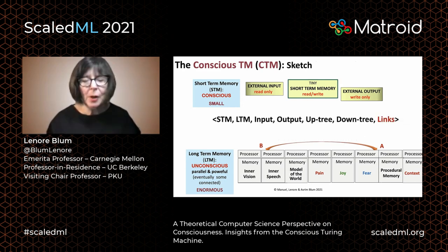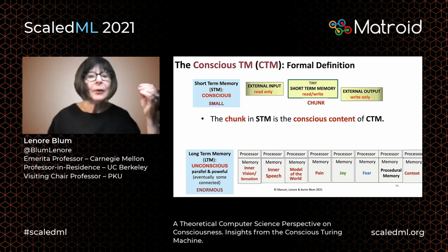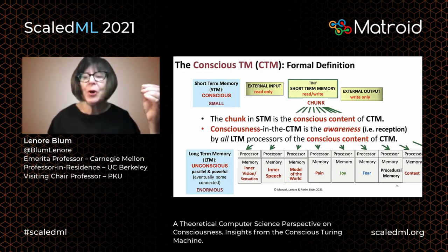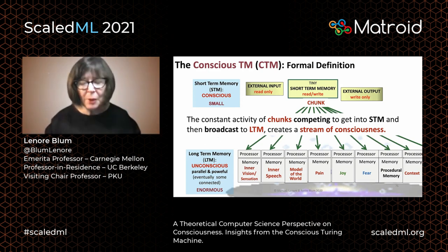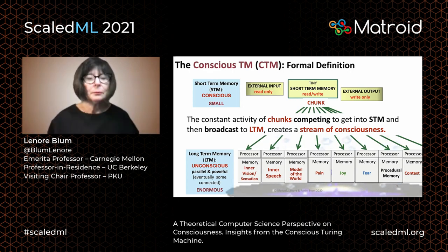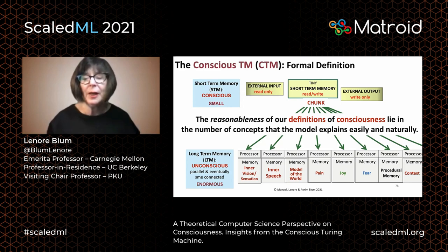Now we have sketched all the components of the CTM and we're ready to give definitions of consciousness in the CTM. We say that the chunk in short-term memory is the conscious content of the CTM, and consciousness in the CTM is the awareness — the reception by all long-term memory processors — of the conscious content. The constant activity of chunks competing to get into short-term memory and then broadcast to long-term memory creates a stream of consciousness. But these are just definitions. The reasonableness of our definitions relies on the number of concepts that the model explains easily and naturally, at least at a high level.